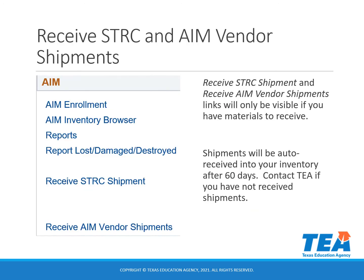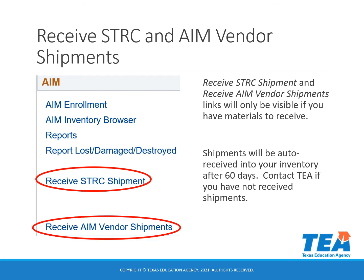As you physically receive AIM shipments, please remember to go into EMAT and receive them electronically into your AIM inventory. You'll see the 'Receive STRC Shipment' or 'Receive AIM Vendor Shipment' links appear if you have materials to receive into your AIM inventory. Please note that shipments will be auto-received into your inventory after 60 days. Contact TEA regarding orders or volumes not received.